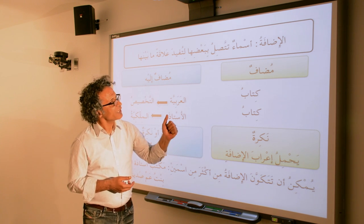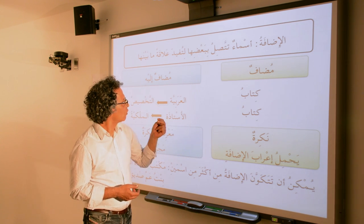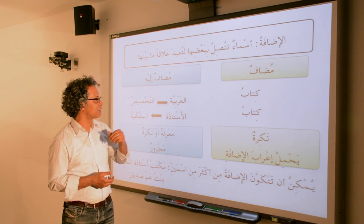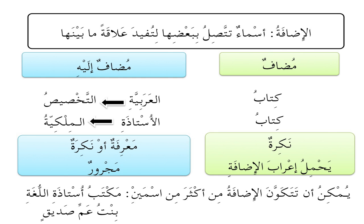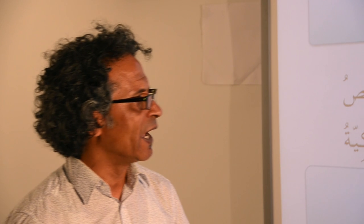Look at the second example: كتاب الأستاذة. Once again we have كتاب as مضاف and الأستاذة as المضاف إليه. Here the relationship between كتاب and الأستاذة is one of ملكية — of ownership — meaning something belongs to something, X of Y.